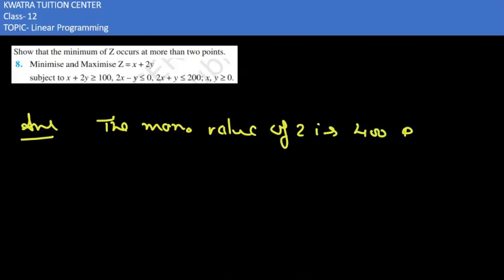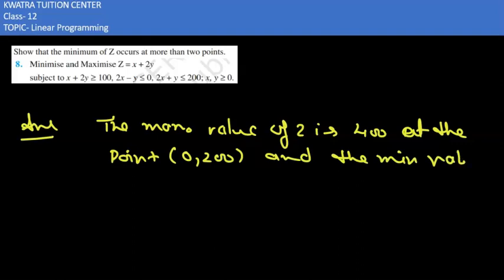And the coordinates are at the point which is (0,200). And the minimum value of Z is 100 at all the points.